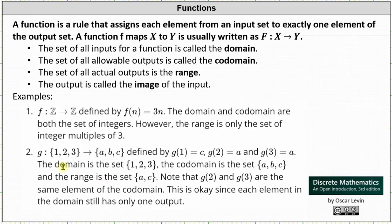In this case, the domain is the set containing elements one, two, and three, and the codomain is the set containing elements a, b, and c. But the range is the set containing only a and c, because those are the only actual outputs. Also notice that g of two and g of three are both a — this is okay since each element in the domain still has exactly one output.